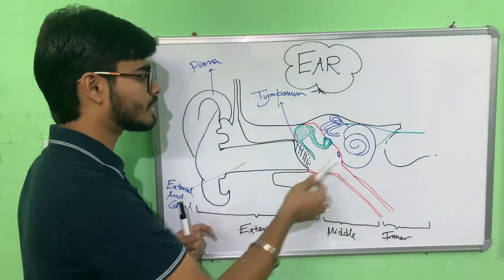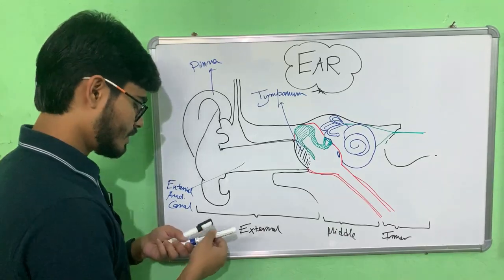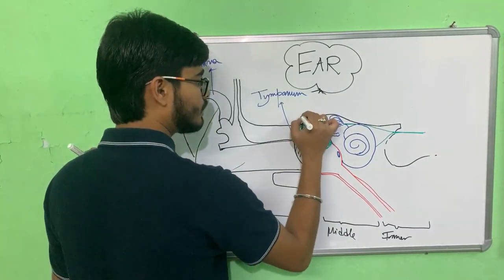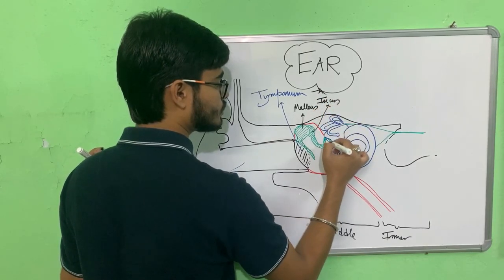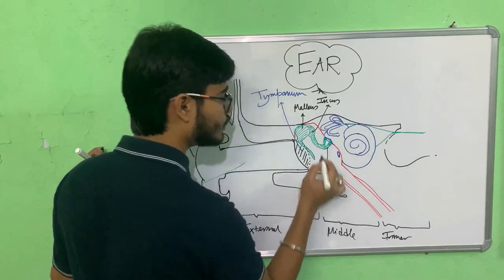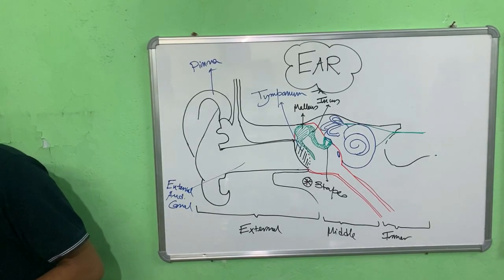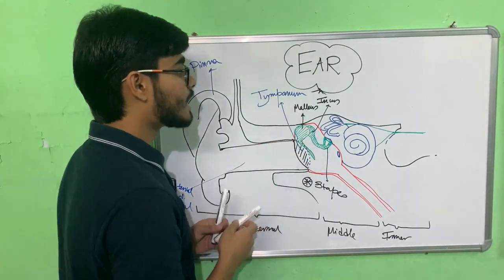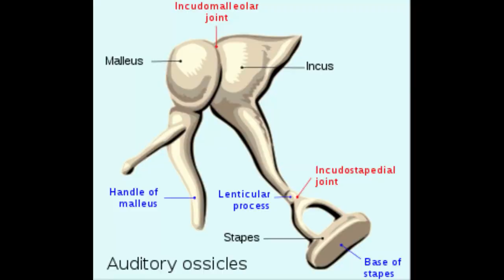The vibration in the tympanic membrane is transferred to the green-colored structures known as the ear ossicles — these are bones. The first one is called malleus, the second is called incus, and the third is called stapes. Note that stapes is the smallest bone in the human body. The malleus is hammer-shaped, the incus is anvil-shaped, and the stapes is stirrup-shaped. These three ossicles are used for the amplification of the sound waves.